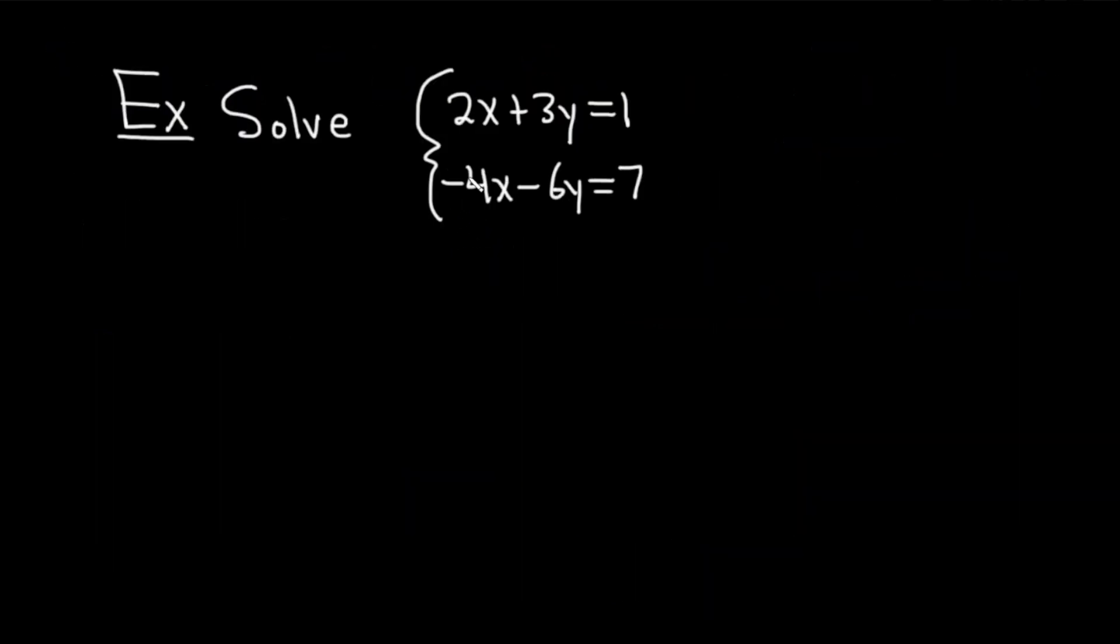Solve the system of equations: 2x plus 3y equals 1, and negative 4x minus 6y equals 7. Solution. So as before, let's try to eliminate variables. In this case, maybe we can just multiply the first equation by 2. Let's go ahead and do that.